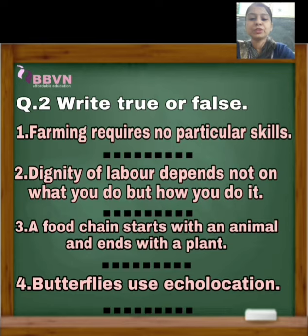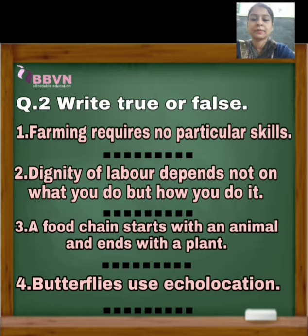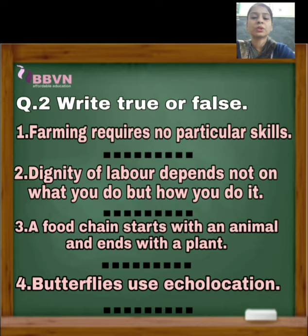Number 3: A food chain starts with an animal and ends with a plant. जो food chain होती है, वो animals से start होकर plants पर खत्म होती है. So is it true or false? Number 4: Butterflies use eco-location. जो butterflies होती हैं, वो eco-location का use करती हैं, अपने खाने को ढूंढने के लिए. So is it true or false? आपको जो नीचे blank दिया है, उसमें fill करना है. I hope आप सबको यह question clear हो गया होगा. It's very easy.